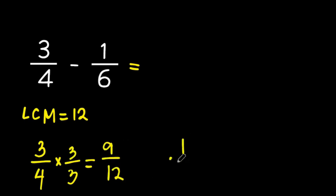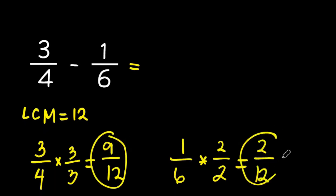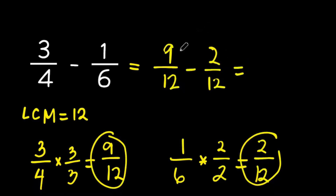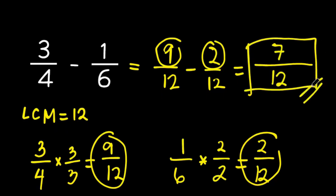The same will happen to 1 over 6. If we multiply it by 2 — both numerator and denominator — the result would be 2 over 12. Now our problem becomes 9 over 12 minus 2 over 12. Step three: perform the subtraction. We simply subtract the numerators while keeping the common denominator. So 9 over 12 minus 2 over 12 equals 7 over 12. The result of subtracting 3 fourths and 1 over 6 is 7 over 12.